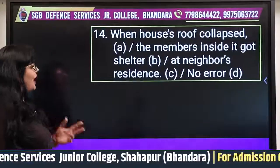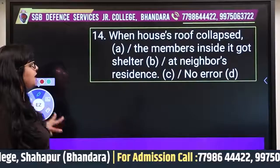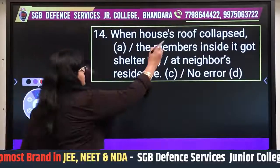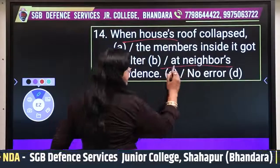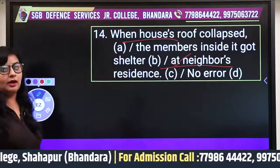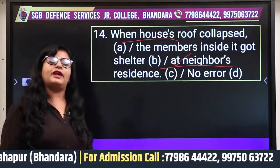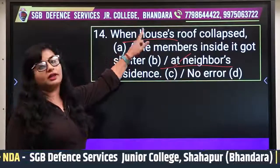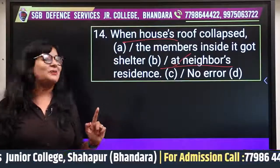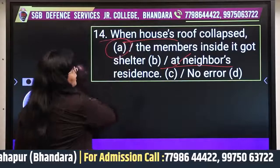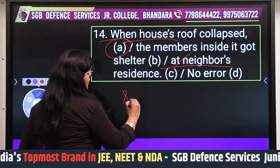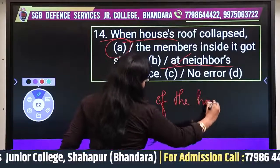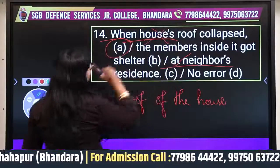Question fourteen: 'When the house's roof collapsed, the members inside got sheltered at the neighbor's residence.' The rule is: we cannot use possessive noun (apostrophe-S) with non-living things. A house is a non-living thing, so 'house's roof' is wrong. It should be 'the roof of the house.' The error is in that part.